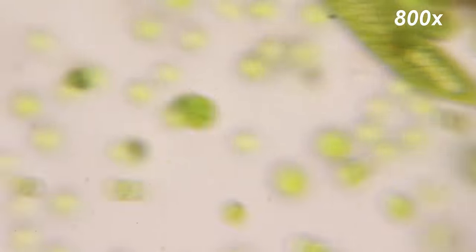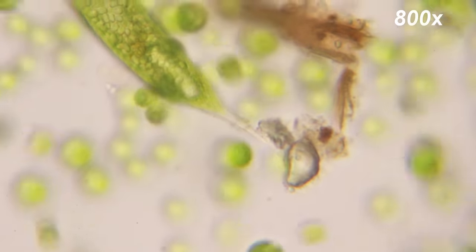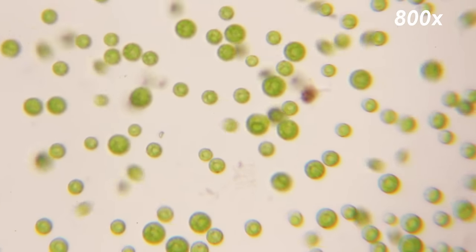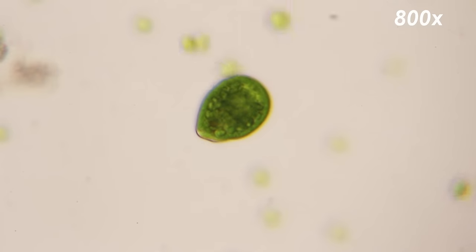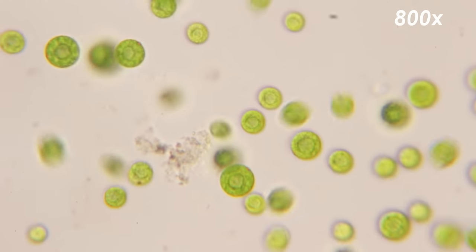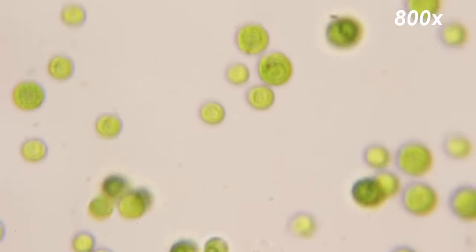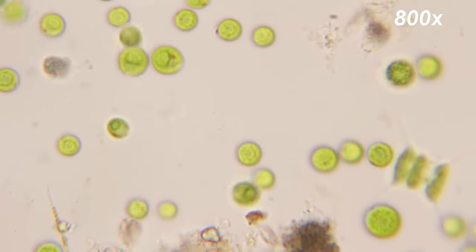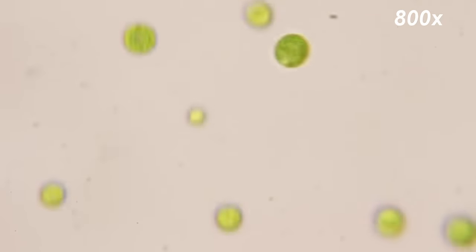This is a Euglena. And so it gives you an idea proportion-wise compared to the size of the Chlamydomonas. And this is at 800 power right here. And here we have a protist just swimming along slowly. And so this gives you a good idea of what the water looks like with all these microorganisms in them.